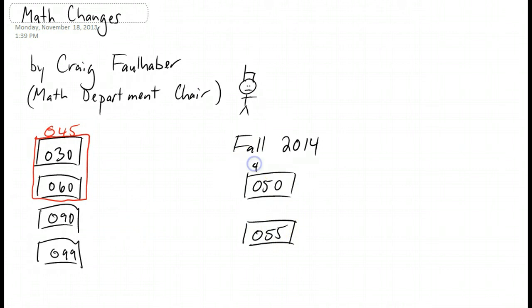Now, 050 is a four-credit course and 055 is a four-credit course. So you only have two classes to go through. It's eight credits and it only takes two semesters to get through. Most students are going to be pretty happy about this situation.